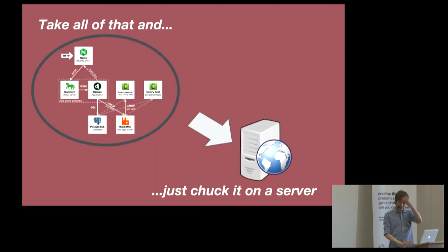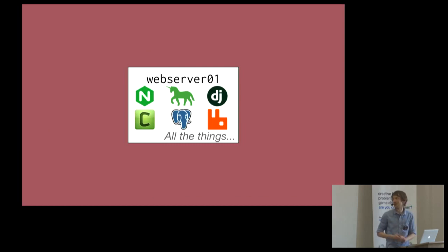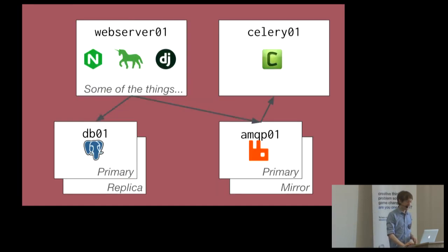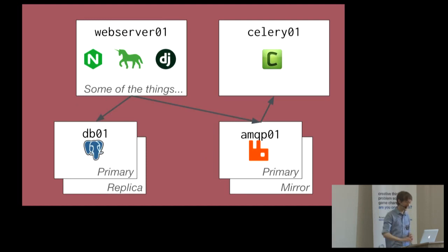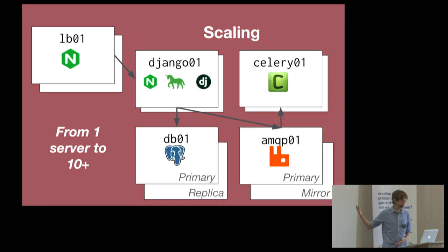Usually this is deployed by just taking all of that and putting it on a box somewhere - that's your web server. You've got Web Server 1 running all the things, then you find that you need to scale a bit, so you break out the database and maybe add a replica. Then you find Celery is using a lot of resources, so you break that out. Then you want to run multiple Django/Gunicorn instances, so you need a load balancer in front. You've gone from one server to basically 10 or more quite quickly.